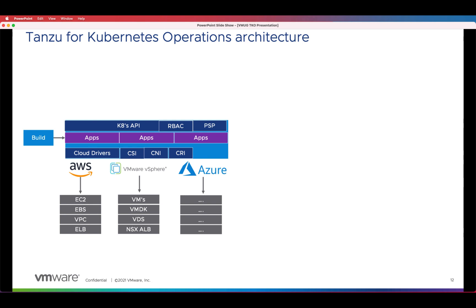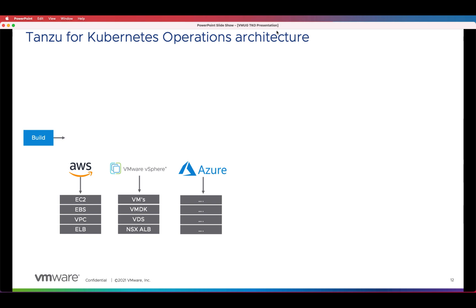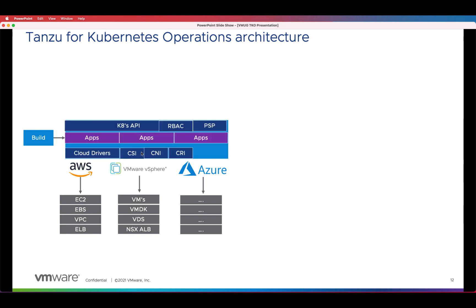Similarly, if you're trying to build one on AWS, then you need to understand what are the different infrastructure parameters that you're going to work with, and accordingly deploy the corresponding CSI drivers or CNI drivers required for that stack to come up.